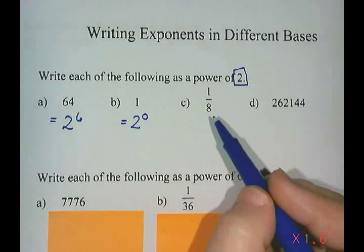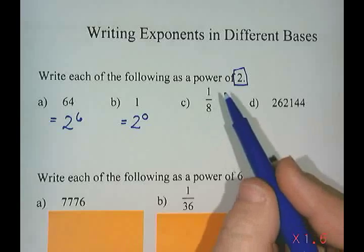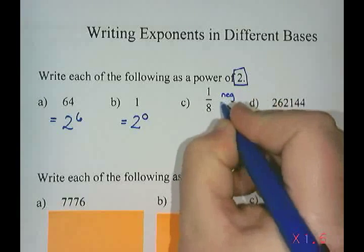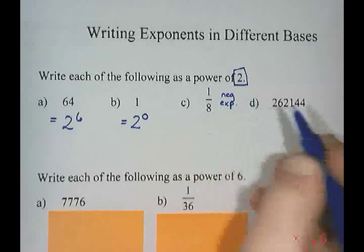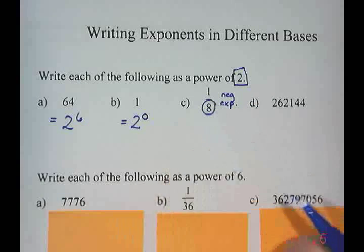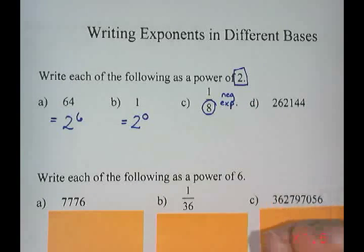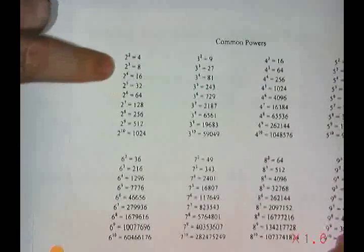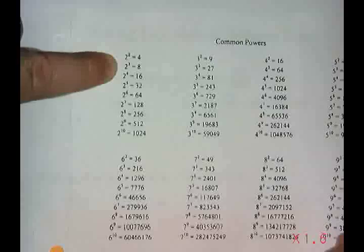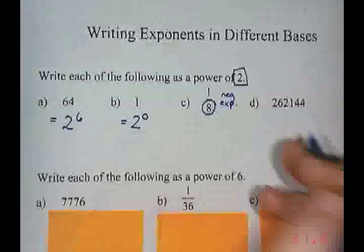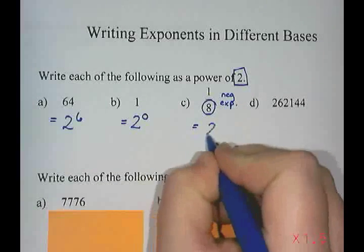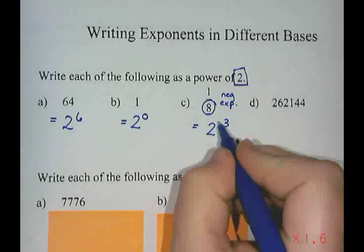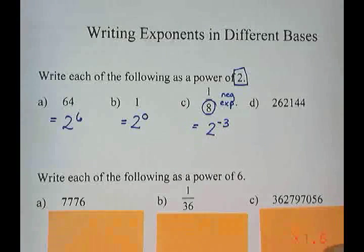The third example is a fraction. Since it's a fraction, I know there has to be a negative exponent. I focus on the base, which is eight, and figure out two to what power gives me eight. From the sheet, two to the power of three gives eight. Because it's a fraction, we use two to the power of negative three.